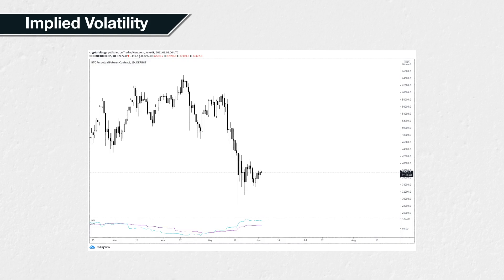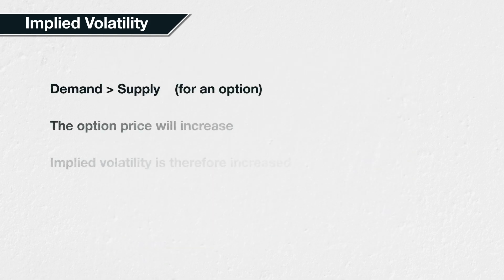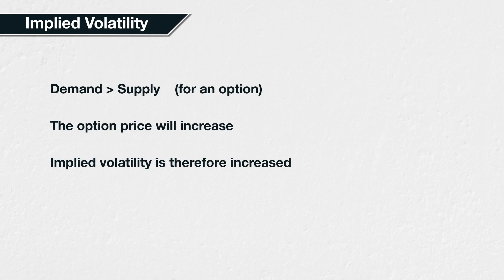Option prices change via the normal market forces of supply and demand. If demand outweighs supply, the price of an option will be driven up, also increasing the implied volatility. A higher option price will push the breakeven price of the option further out of the money, meaning price has to move further for the option buyer to make a profit. This implies that a larger move is expected in the underlying price, so it implies higher volatility in the underlying price.